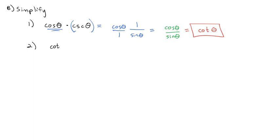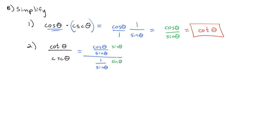Here's another one: cotangent of theta divided by cosecant of theta. The general rule for simplifying is to change everything to sines and cosines. Cotangent in the numerator is cosine over sine, and cosecant in the denominator is 1 over sine. We multiply top and bottom by sine theta, the sines reduce out, leaving just cosine of theta. So cotangent divided by cosecant simplifies to cosine.